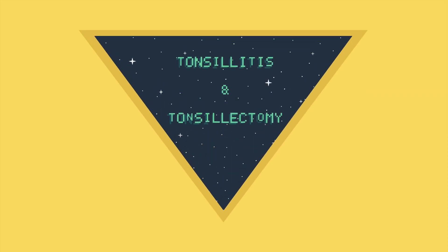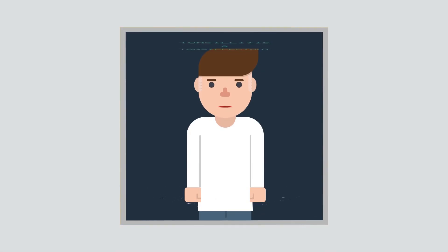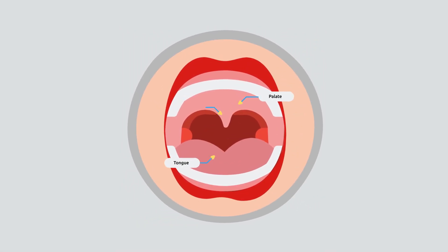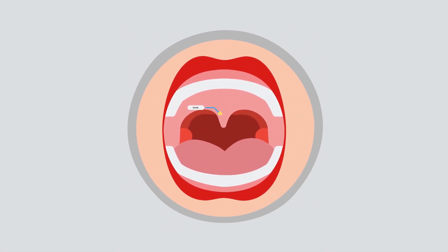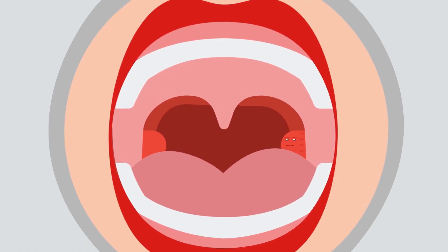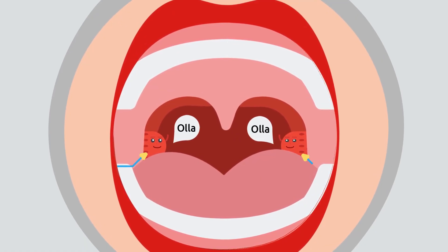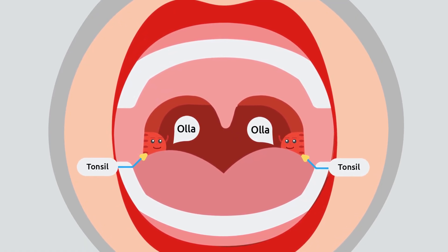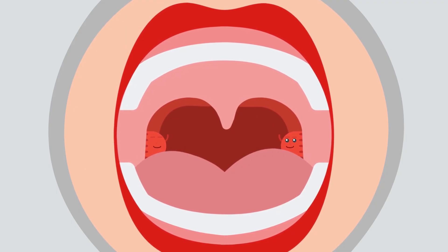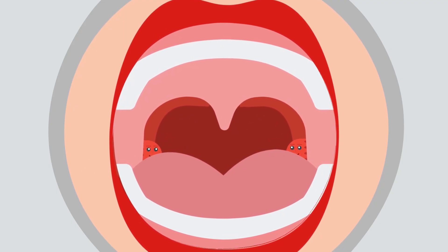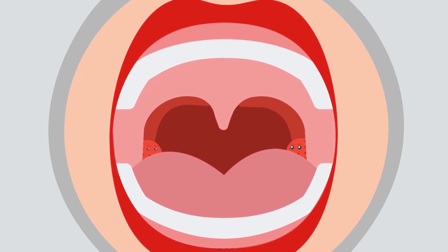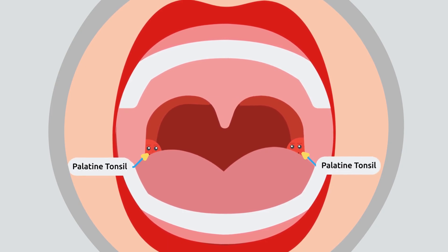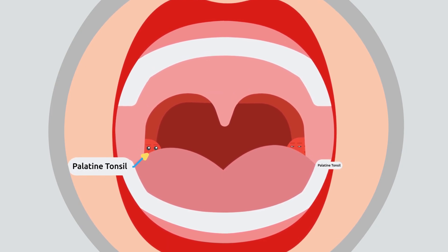Tonsillitis and tonsillectomy. When a person opens his mouth, there are a lot of things you can see. One of the most important organs that help fight off infection are the tonsils. Tonsils are often overlooked when you open your mouth, because they are often small and hidden between the two arches. These tonsils are known as palatine tonsils due to their location near the palate, or the roof of the mouth.